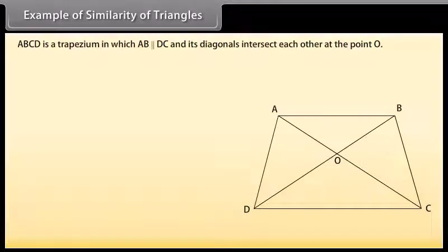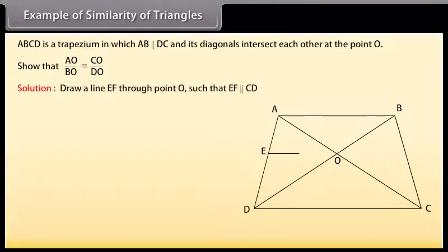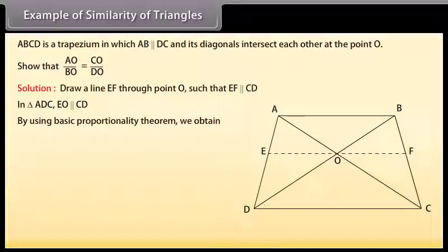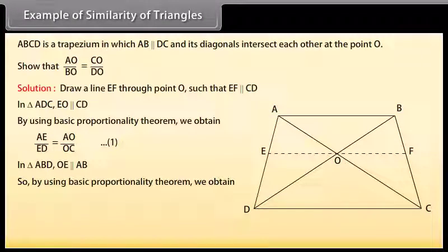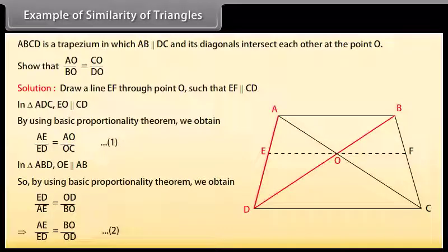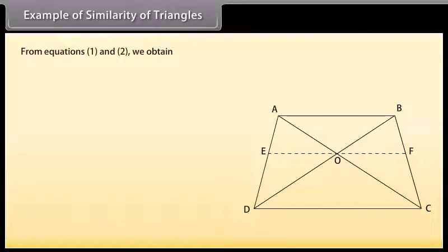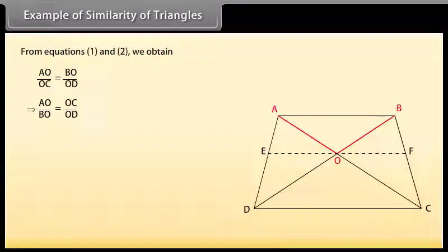ABCD is a trapezium in which AB is parallel to DC and its diagonals intersect each other at point O. Show that AO upon BO equals CO upon DO. Draw a line EF through point O such that EF is parallel to CD. In triangle ADC, EO is parallel to CD; by the basic proportionality theorem, AE upon ED equals AO upon OC — mark it as one. In triangle ABD, OE is parallel to AB; by the basic proportionality theorem, ED upon AE equals OD upon BO, which implies AE upon ED equals BO upon OD — mark it as two. From one and two, AO upon OC equals BO upon OD, which implies AO upon BO equals OC upon OD.